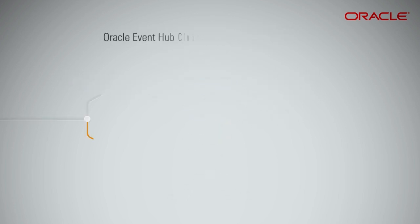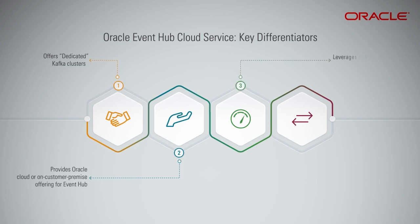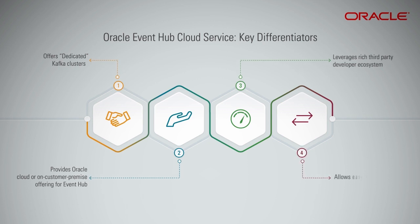Here are the key differentiators for Oracle Event Hub Cloud Service. It offers dedicated Kafka clusters by the cloud provider. It provides an Oracle Cloud or on-customer-premise offering for Event Hub. It leverages a rich third-party developer ecosystem, especially when it comes to tooling and monitoring. The Event Hub Cloud Service is built on top of native Kafka, and allows easy migration to cloud. The lift and shift of on-premise Kafka clusters to Oracle Cloud is easy.